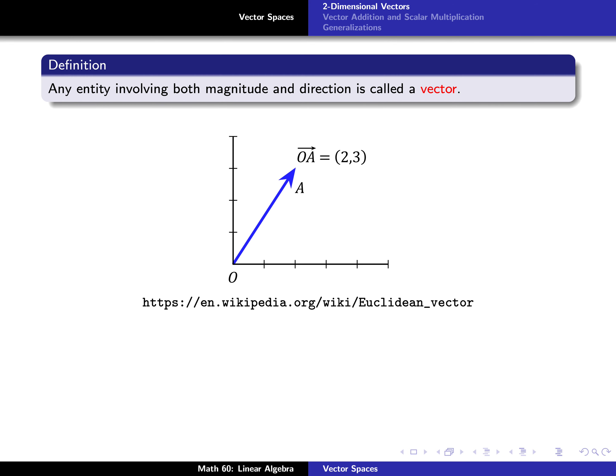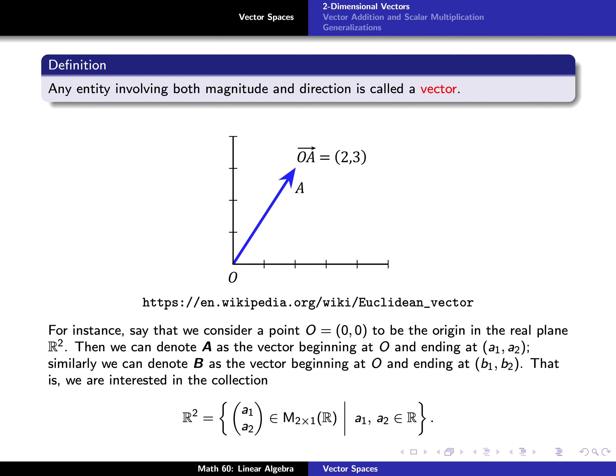Simply put, a vector is any entity that involves both magnitude and direction. You can see from the picture here that we can think of a vector as an arrow. For example, we might start at the origin, which we'll denote as the point (0, 0), and then draw to some point A, which here on the slide is denoted by (2, 3). In general, it might be some (A1, A2). The direction and the magnitude of this arrow is exactly what we're calling a vector.